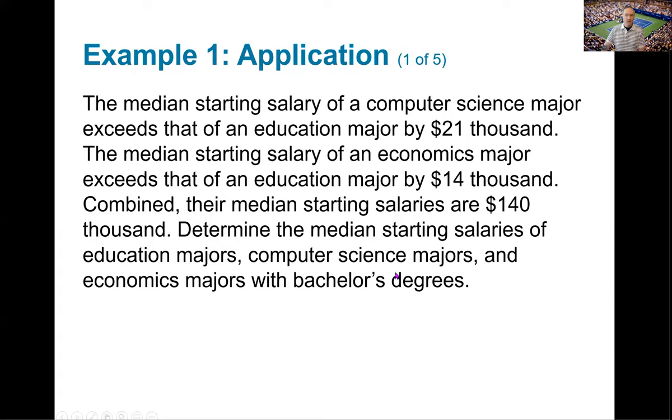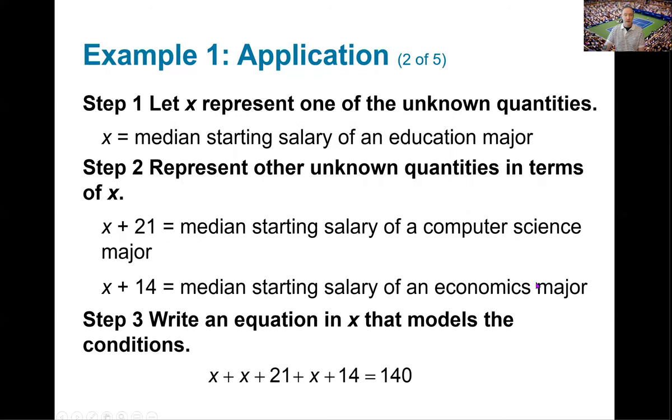First thing you should be looking at in this problem is what to call x. And that's a very, very easy choice. Because please notice, it put the computer science major's income in terms of the education major. It put the economics major's income in terms of the education major. So everything is with respect to how much the education major makes. So without a doubt, I'm letting x equal the median starting salary of an education major.